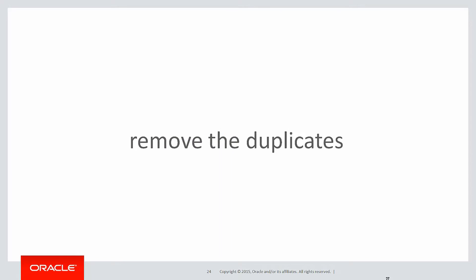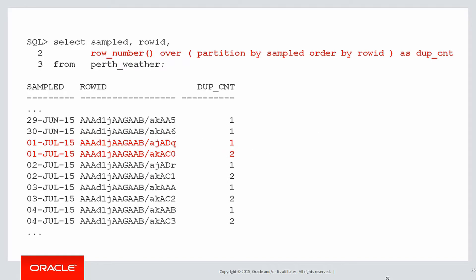The task becomes: how do we remove duplicates nice and easily? Let's look at analytics to solve the problem. Using ROW_NUMBER, we're going to partition by the sample date, which happens to be the logical primary key — the primary key obviously wasn't enforced because we allowed the duplicates to come in — and we're ordering by row ID, which is effectively any unique value we can find. You can see by the two values highlighted in red: for a given duplicate, one row number is 1 and one is 2.